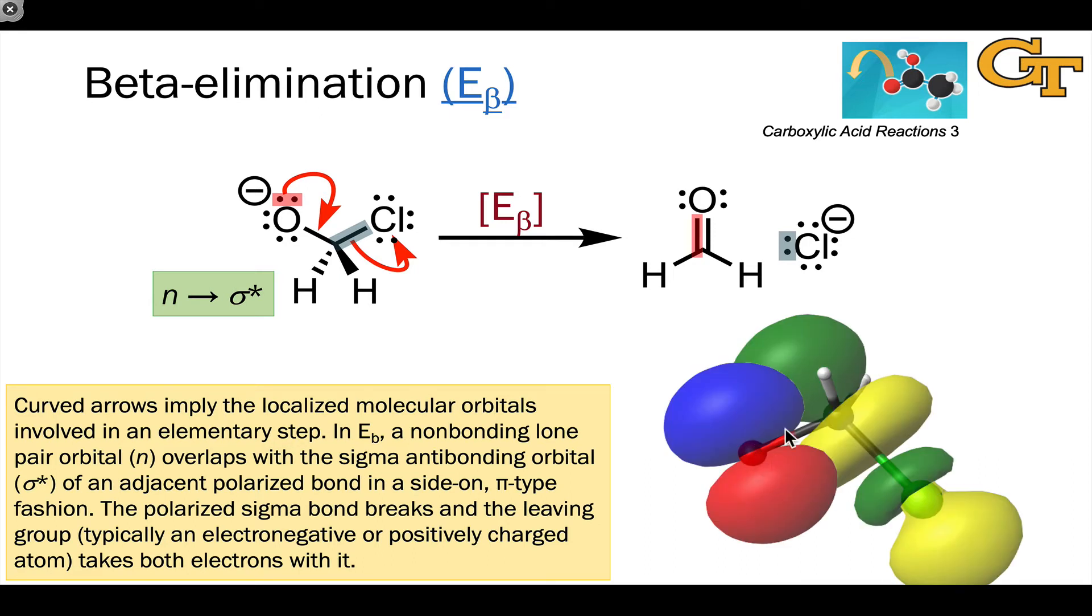Here's an image showing the overlap of the orbitals involved, and we can see here that the overlap is now pi-type. The nucleophilic orbital here shown in blue and red, the lone pair orbital on oxygen, is overlapping in a side-on fashion with these two lobes of the sigma-star orbital of the carbon-chlorine bond.